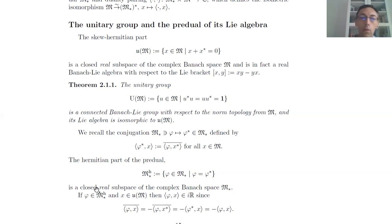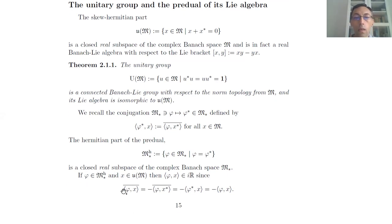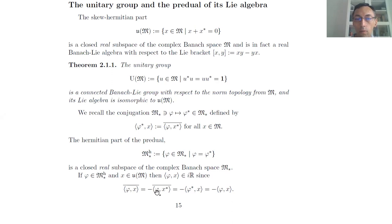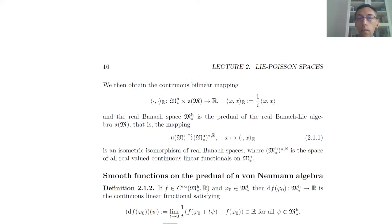M-star is the complexification of this real subspace. Whenever we apply a Hermitian functional to a skew-adjoint element we obtain a value that is purely imaginary. If we take the conjugate of this value we obtain the same as taking minus phi, because x-star is minus x. So minus goes out, and then we have the expression from the definition of phi-star, giving us minus phi-star applied to x. Since phi-star equals phi, the complex conjugate of this number is its opposite, so it is purely imaginary.